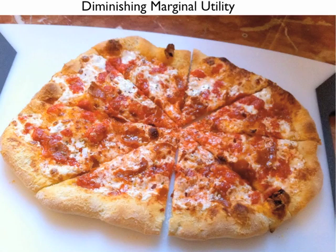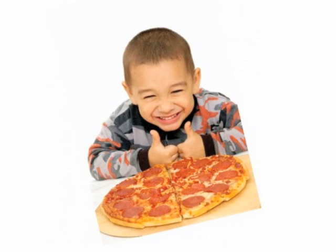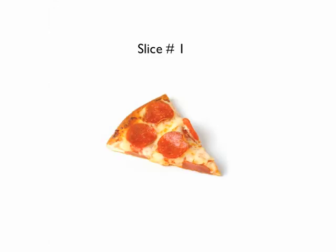This video lesson is on diminishing marginal utility. Total utility is the aggregate level of satisfaction or fulfillment that a consumer receives through the consumption of a specific good or service. The specific good in this example will be pizza. Marginal utility is the additional satisfaction a consumer gains from one more unit of a good or service.